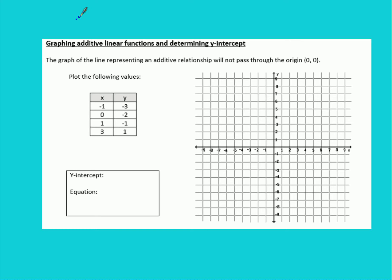Additive relationships of linear functions and how to put them on a graph. If they tell you that the graph of the line representing an additive relationship will not pass through the origin, that means there's going to be some value that is our y-intercept that is not at the origin.